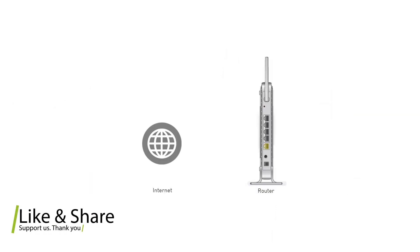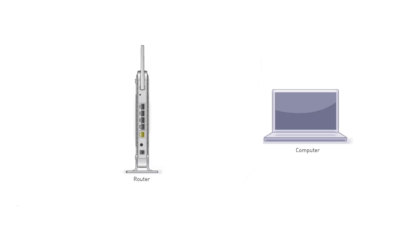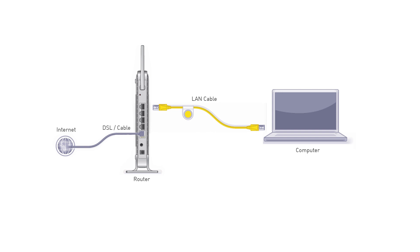If you don't have a modem between the ISP and the Netgear router, then follow these steps. Step 1: Connect your ISP LAN cable to the input internet port of the Netgear router. Step 2: Take the network cable and connect it to one of the output ports of the router, and the other end goes to the computer LAN input.